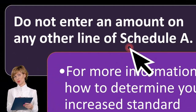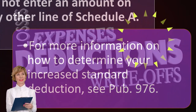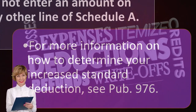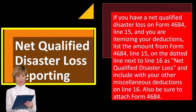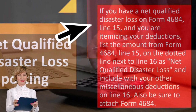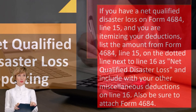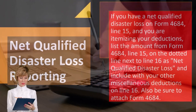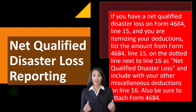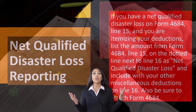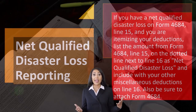Do not enter an amount on any other line of Schedule A. For more information on how to determine your increased standard deduction, you can see Publication 976 if that applies. If you have a net qualified disaster loss on Form 4684, line 15, and you are itemizing your deductions, list the amount from Form 4684, line 15, on the dotted line next to line 16 as 'net qualified disaster loss,' and include it with your other miscellaneous deductions on line 16. Also be sure to attach Form 4684.